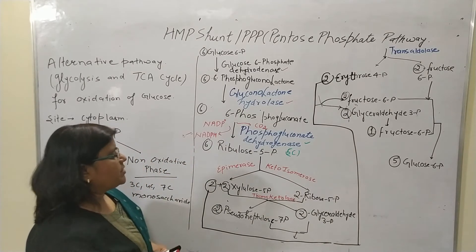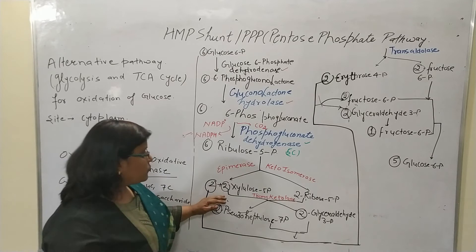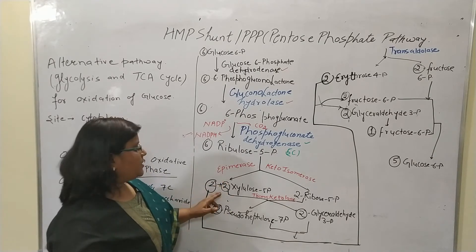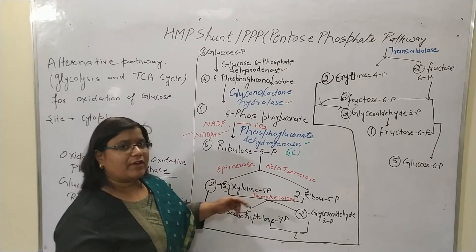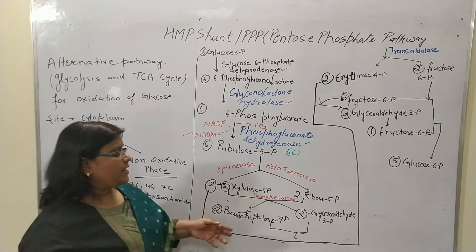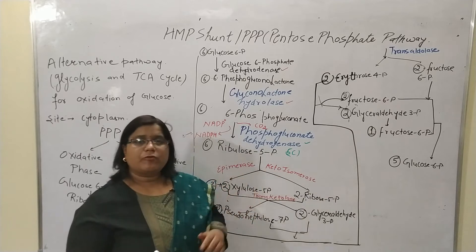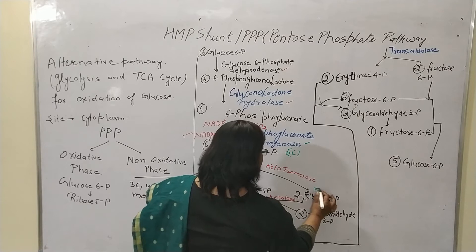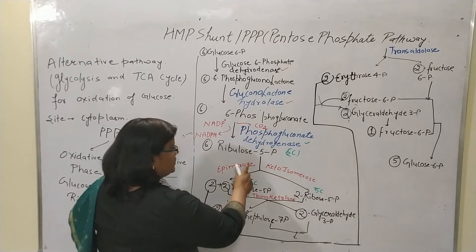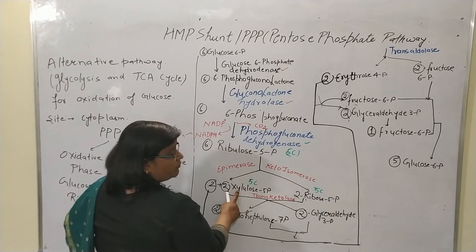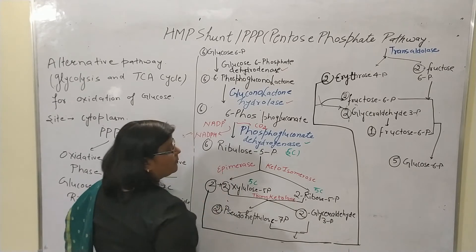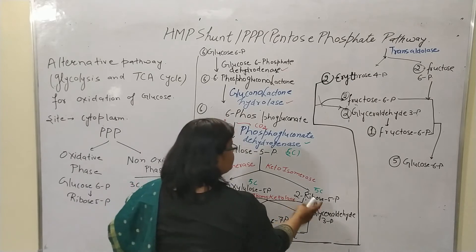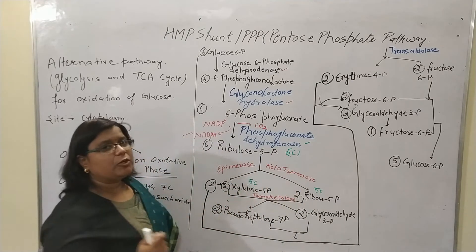The ribulose 5-phosphate is then converted into 4 molecules — 2 plus 2, as I have written, which we will discuss shortly. Four molecules of xylulose 5-phosphate are generated and 2 molecules of ribose 5-phosphate are generated, both being 5-carbon sugars. Ribulose 5-phosphate is converted into xylulose 5-phosphate in the presence of epimerase, and ribose 5-phosphate is generated with the help of ketoisomerase.